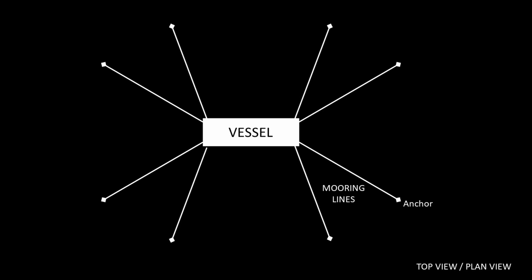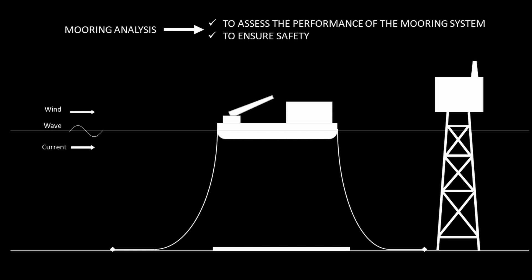Typically, eight number of mooring lines are used, which are spread around the vessel in all directions. Hence, they call it as a spread mooring system. In order to assess the performance of a mooring system in given environment conditions, we perform mooring analysis.